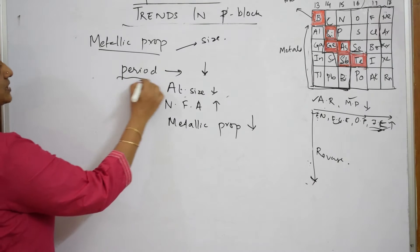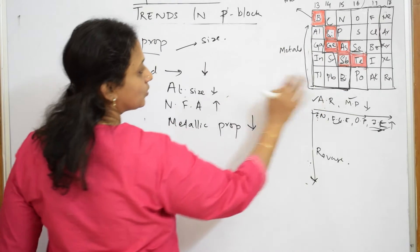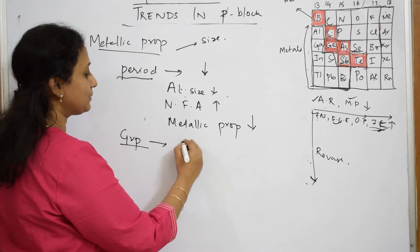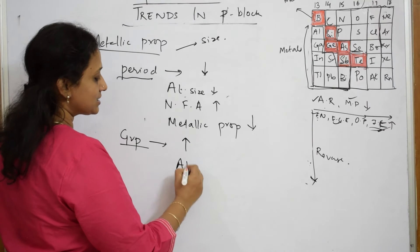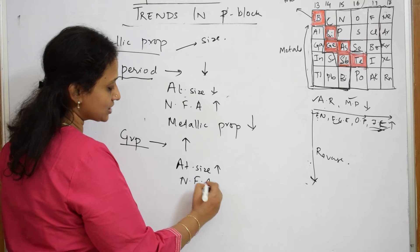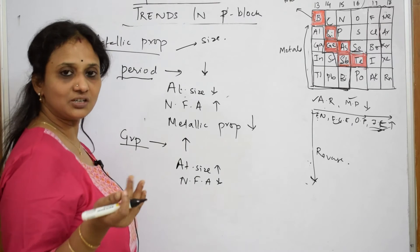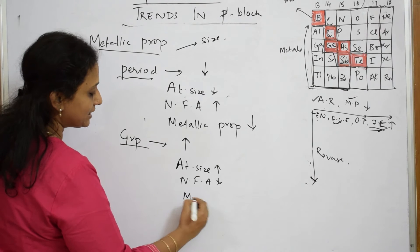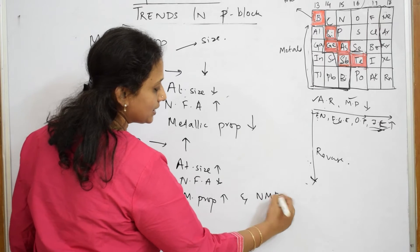Now, when I observe it in a group — all are metals. So, in a group, the metallic property is increasing. Atomic size increases, nuclear force of attraction decreases. When the outermost shell is far away from the nucleus, it can easily donate electrons. Hence, metallic property increases and non-metallic property decreases.